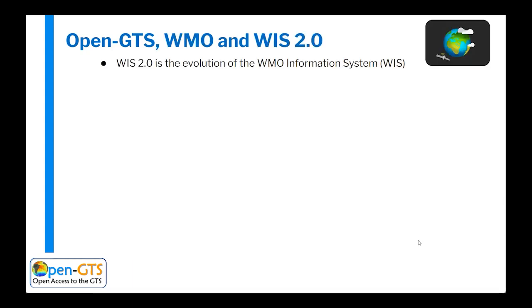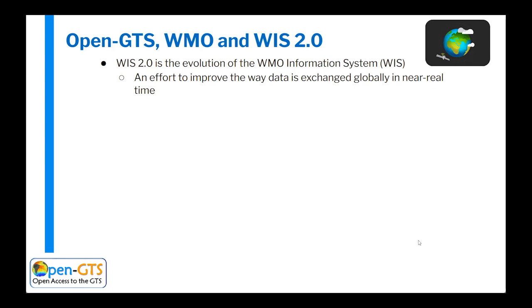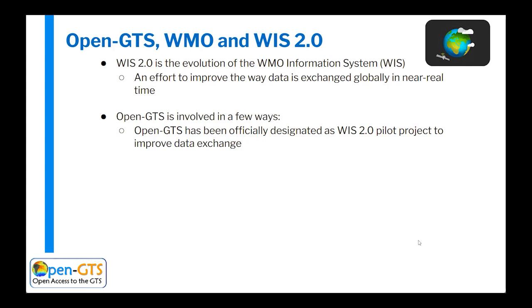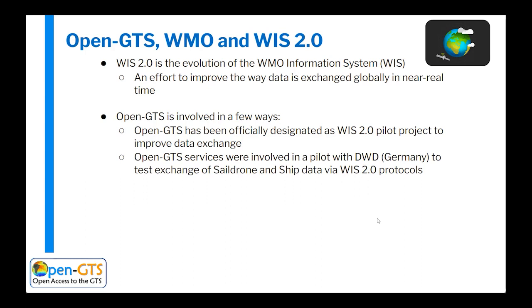So how does OpenGTS fit into WIS 2.0? The WIS 2.0 is really an evolution of the WMO information system — an effort to improve the way data is exchanged globally in real time and to make it more open and available to more users using more modern technologies such as the internet rather than the old GTS infrastructure. OpenGTS has been officially designated as a WIS 2.0 pilot to improve this data exchange. As a demonstrator project, we are involved with DWD in Germany to test exchange of sail drone and ship data via the WIS 2.0 protocols.